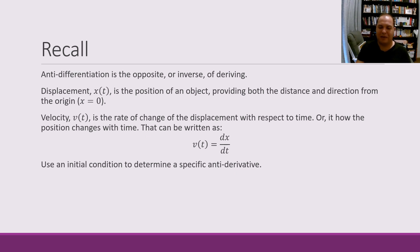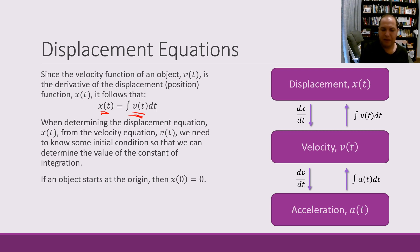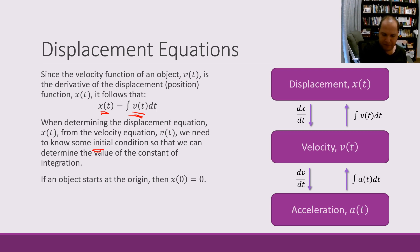In terms of velocity, you should also be able to use initial conditions to determine specific anti-derivatives, which was covered in a previous video. Since the velocity function is the derivative of displacement, it follows that the displacement function is the integral of the velocity function. Now if you want to know a specific equation for displacement we need some initial condition, so once we've got our anti-derivative with our constant plus c, we can substitute in a known value about the initial position and work out the displacement function.